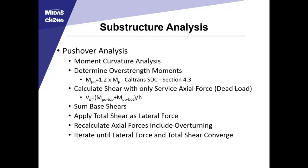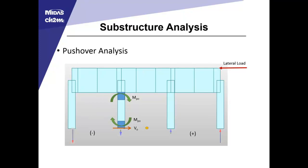Once we have the base shears in each column, we sum those and then apply that total sum as a lateral force, recalculate the axial forces in each individual column including dead load plus rigid overturning, and continue to iterate until the lateral force and the total shears converge. The overstrength moments are in the plastic hinge regions on all four columns. In the first step, the lateral load is zero and reactions are just the result of service dead load. In the second iteration, applying that first summed base shear as lateral load with rigid overturning gives different axial forces in each column, different ultimate moments, and different shears — and we continue iterating until they are equal.